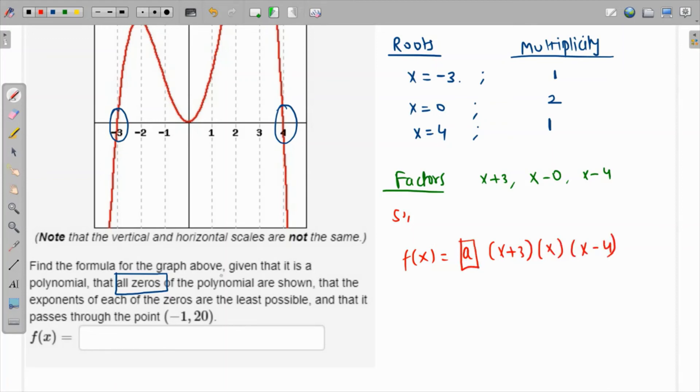In order to find the leading coefficient, we use the fact that it passes through (-1, 20). So all we have to do is plug in -1 and 20: 20 = a × (2) × (-1) × (-5). This becomes 20 = -10a, which means that the value of a is -2.